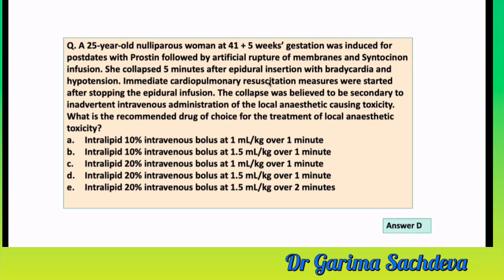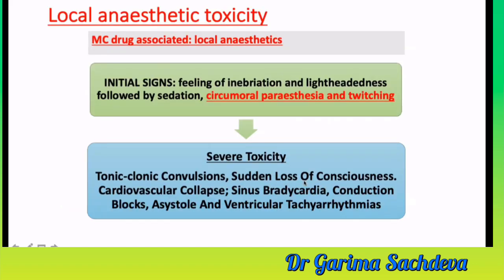The answer for local anesthetic toxicity is D — intralipid. For local anesthetic toxicity you give intralipid 20%. This is an important recall question. The dose is 20% intralipid IV bolus at 1.5 ml per kg over one minute. Local anesthetic is the most common drug associated with toxicity in pregnant females.